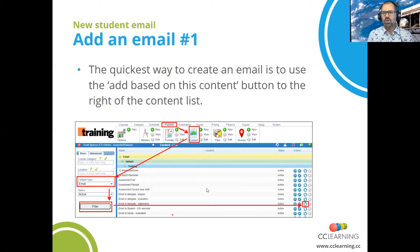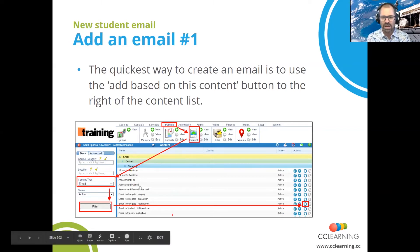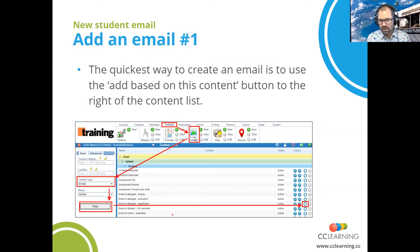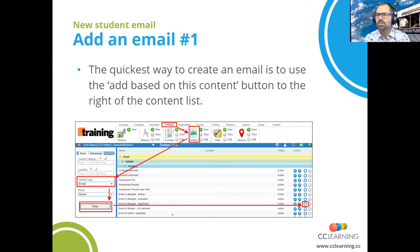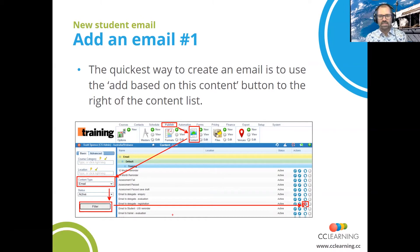So, adding an email. The quickest way to create an email is to use the 'Add Based on This Content' button — take an existing email. How do we get there? Click on the Publish tab, then click on the Content icon. That will give us a list of content. Filter by content type: email. Click on the filter button and then use this button over here. So: Publish, Content, filter by content type, put on the filter, and then click on the 'Add Based on This Content' button. That's a really quick way of creating a new email for a student.